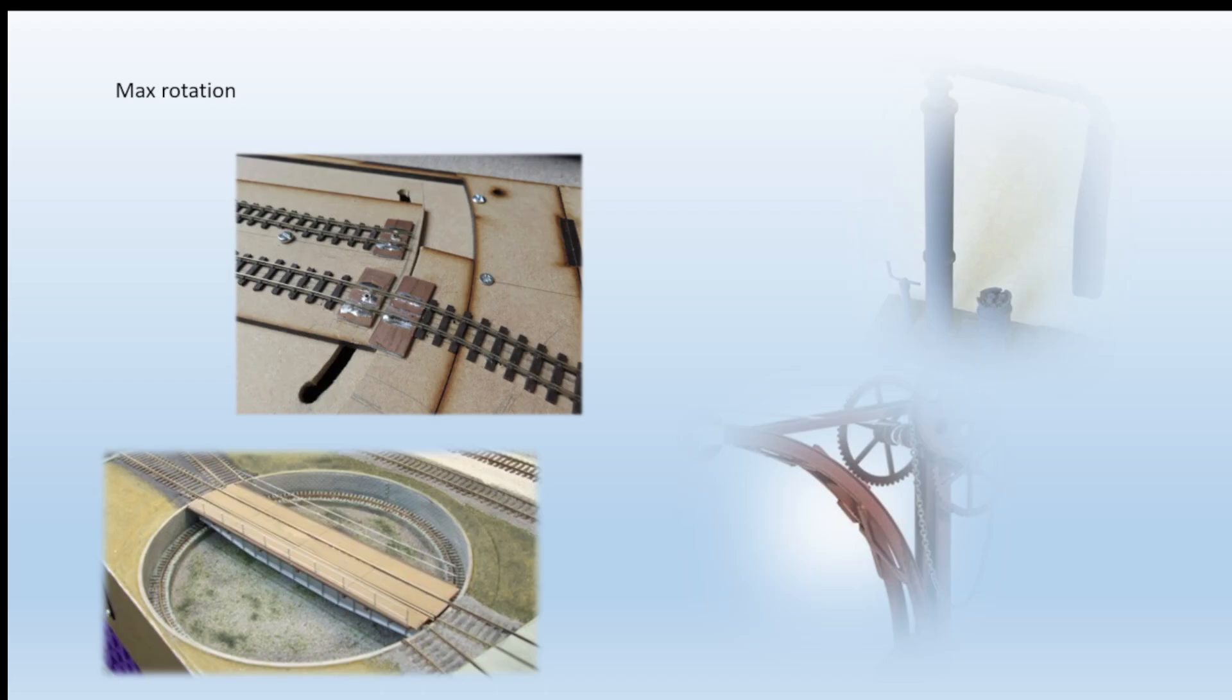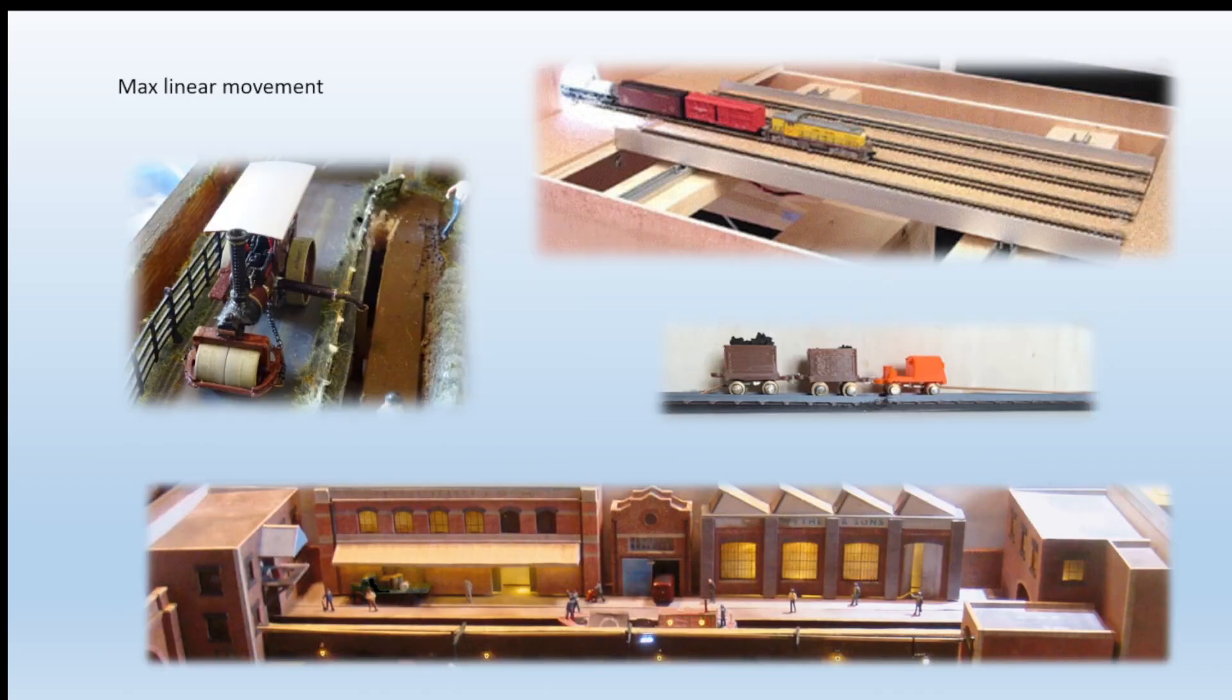But apart from rotational limitation, when we want to limit linear movement, you can see a number of examples here. We have the road roller that we use on our back and forth layout. We have the canal barge that we have on our back and forth layout. We have traversers. We have the mine shaft and the mine wagons that traverse up and down a track.